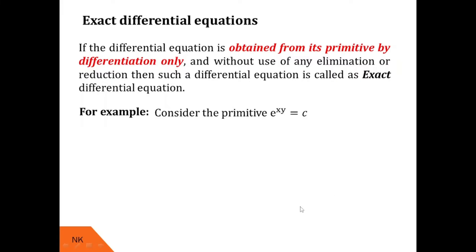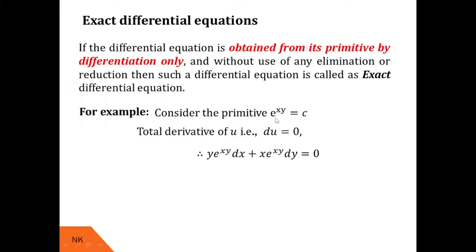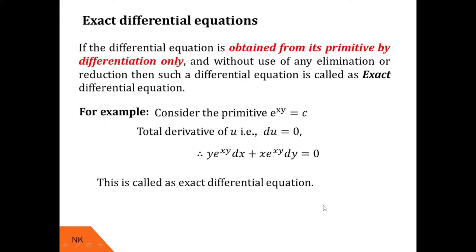Let me show another example. Consider u = e^(xy). The total derivative is given by (∂u/∂x)dx + (∂u/∂y)dy. Here ∂u/∂x = y·e^(xy) and ∂u/∂y = x·e^(xy). This differential equation obtained from the primitive is exact because we used only the derivative technique. Note that this looks like M dx + N dy, where M = y·e^(xy) and N = x·e^(xy).